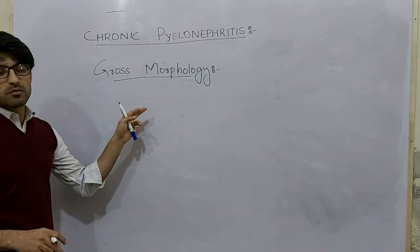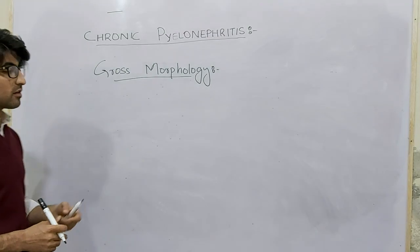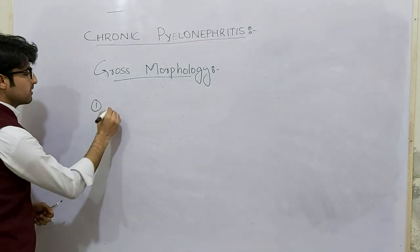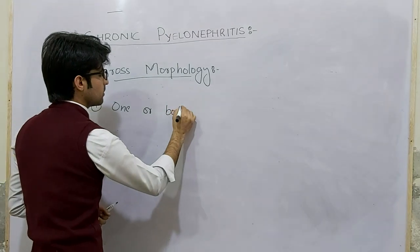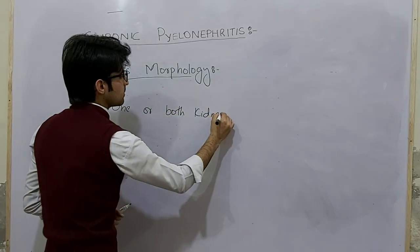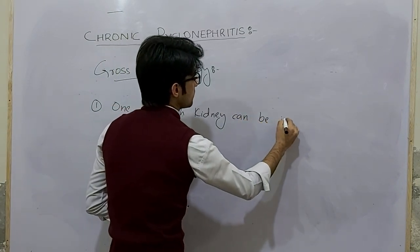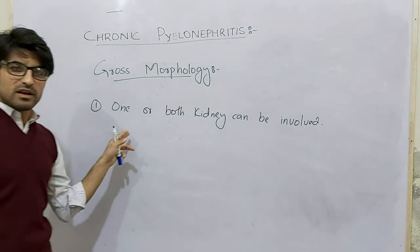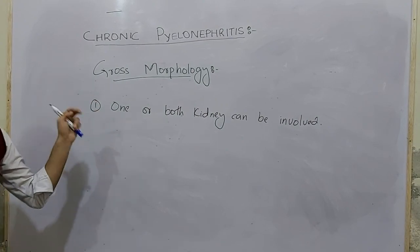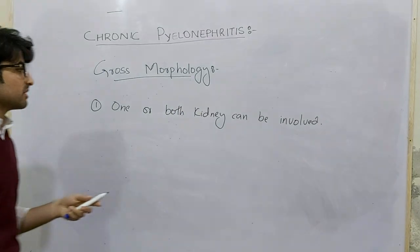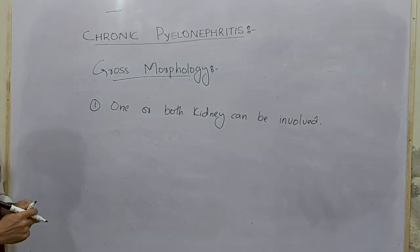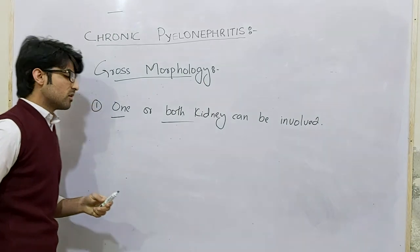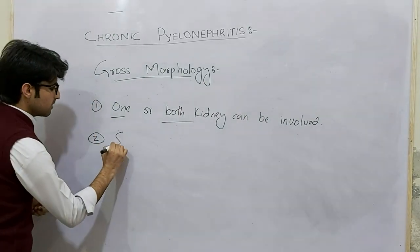We will study the gross morphology of the kidney in chronic pyelonephritis. The first point is that one or both kidneys can be involved. We have already studied this in unilateral and bilateral chronic obstructive and chronic reflux-associated pyelonephritis — it depends on the situation. The second point is that there will be sclerosis.